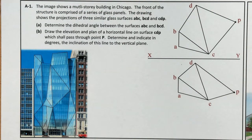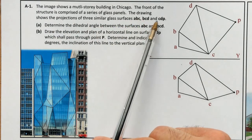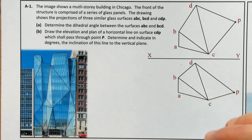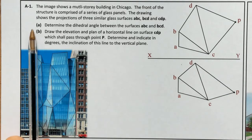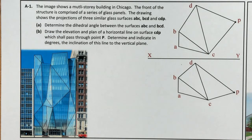For Question A1, it says: the image shows a multi-storey building in Chicago. The front of the structure is comprised of a series of glass panels, and the drawing shows the projections of 3 similar glass surfaces ABC, BCD, and CDP. Part A says: determine the dihedral angle between surfaces ABC and BCD.